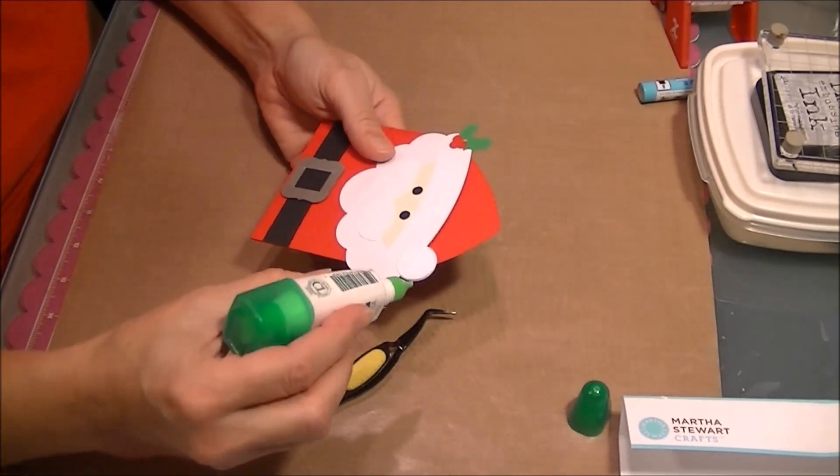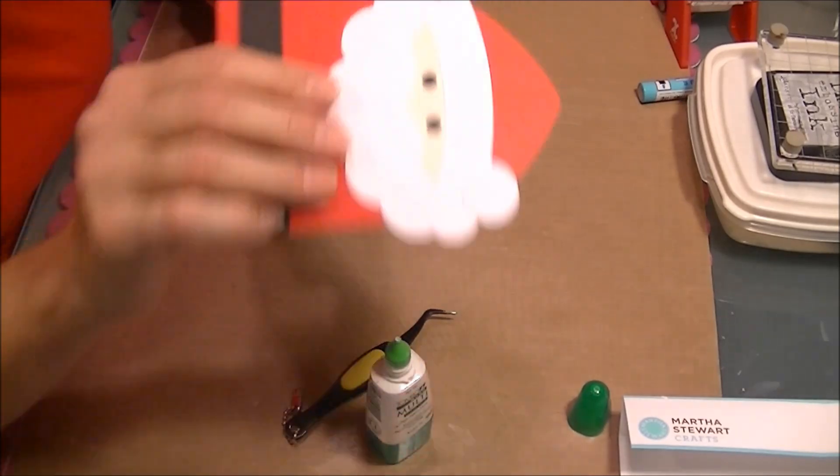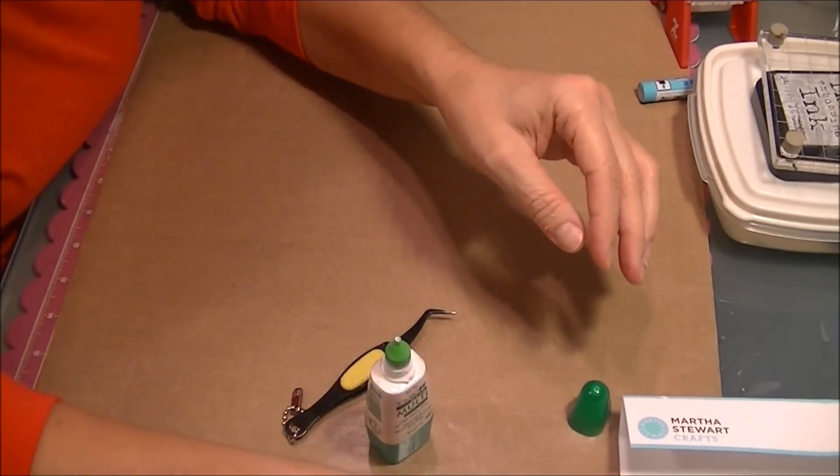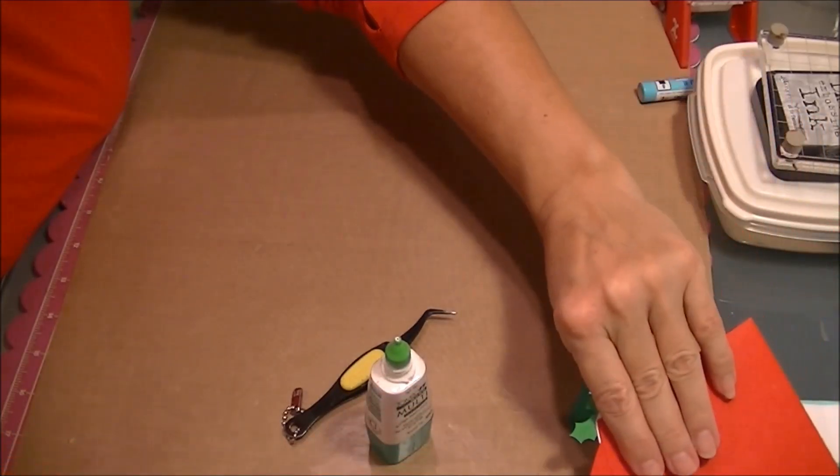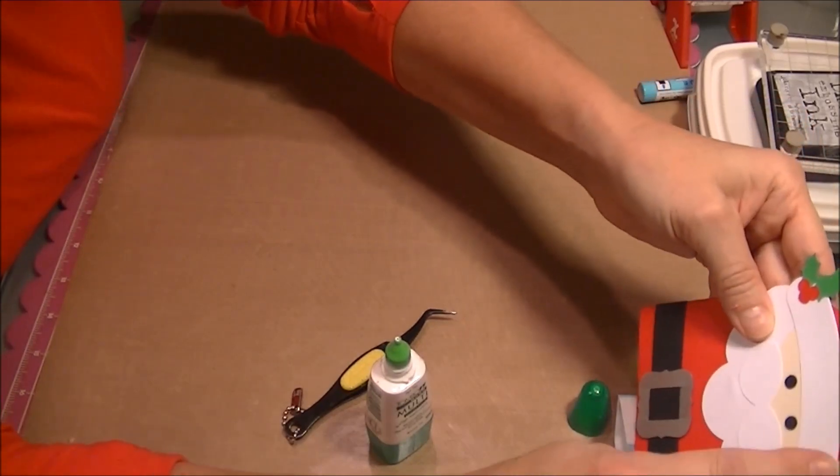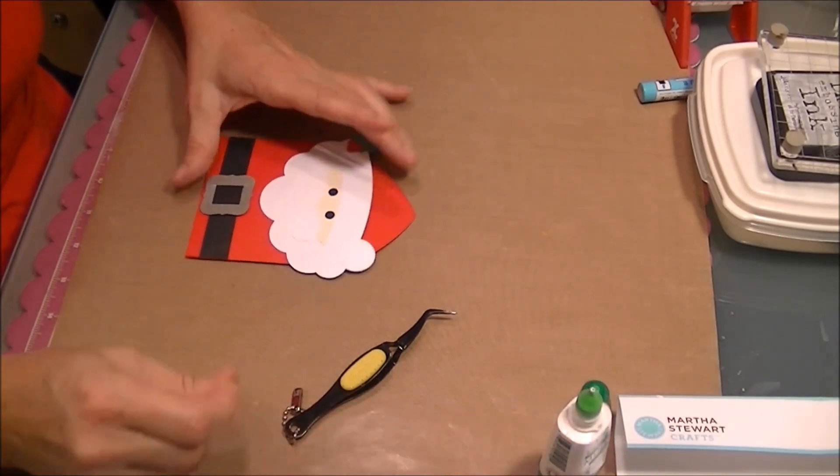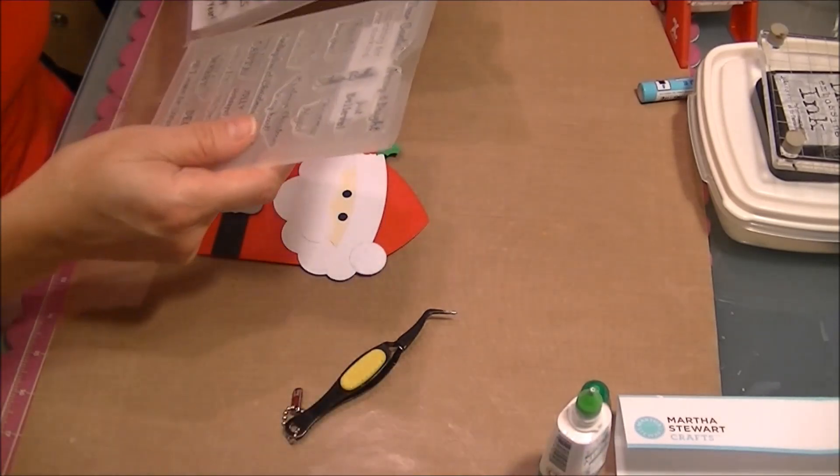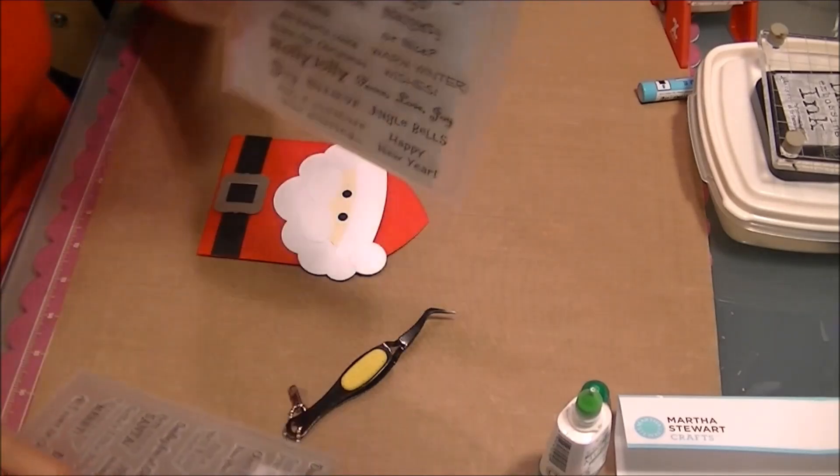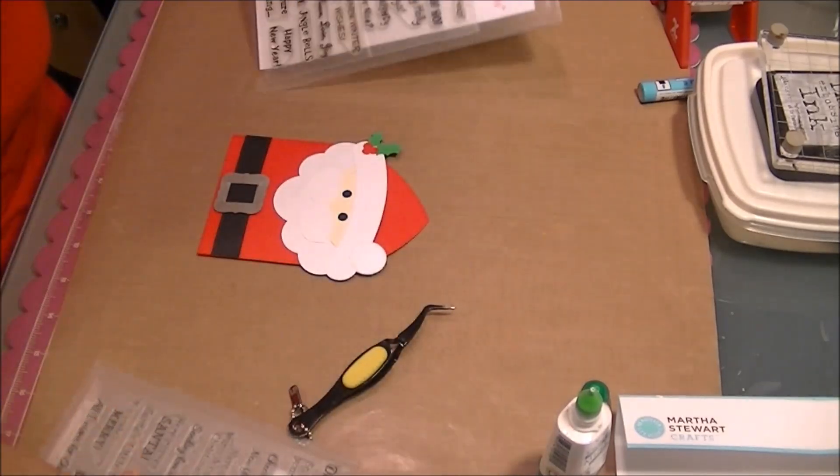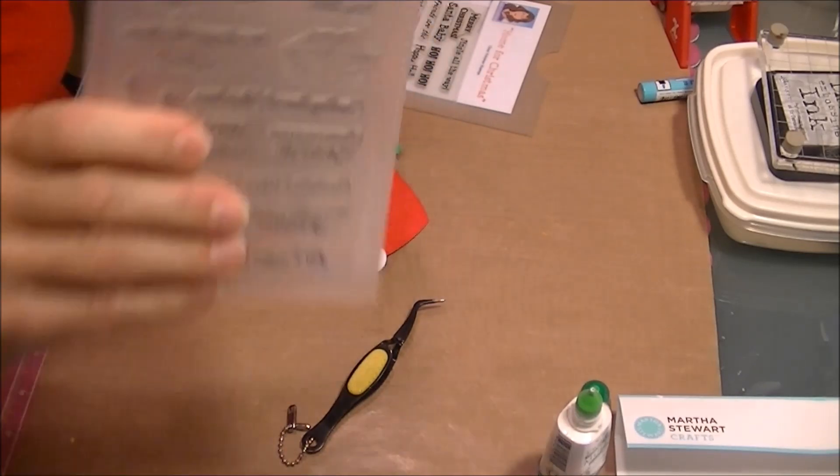Didn't get it all the way on there right there. Let's put a little glue down. Stick it in. There we go, fill it in that empty spot. Now for the sentiments. I will be using Home for Christmas and Very Merry.